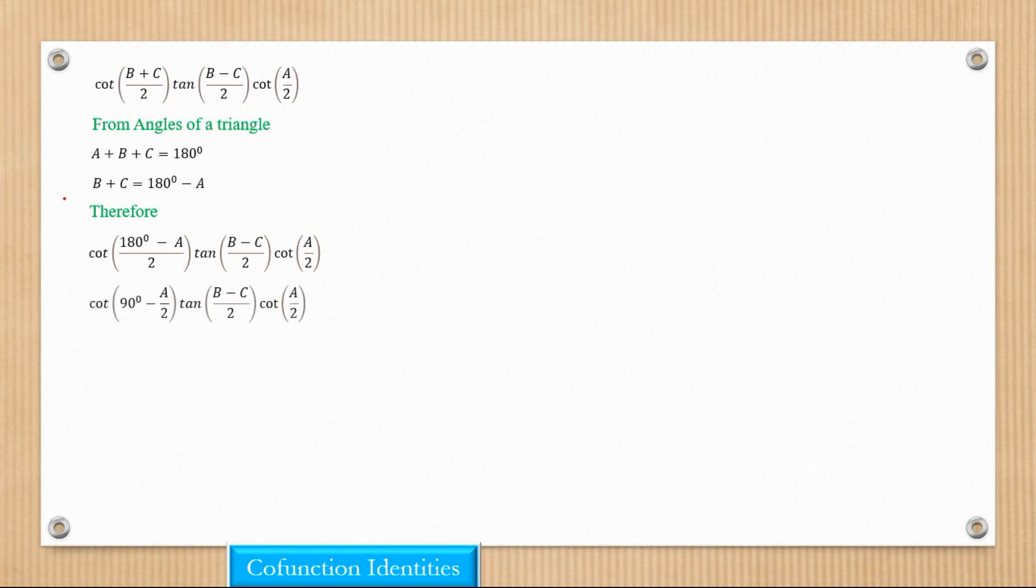Now we can actually see that the two divides on both sides and remain with 180/2, which is 90 minus A/2. Now, the next step that happens here is we would actually want to expand this as a double angle, but we cannot expand this except if it is in a tan format.